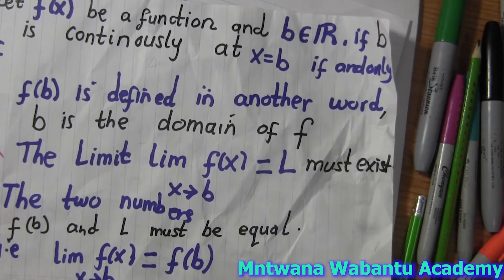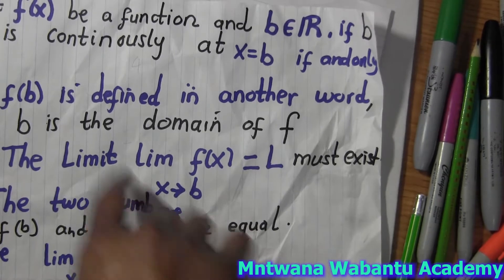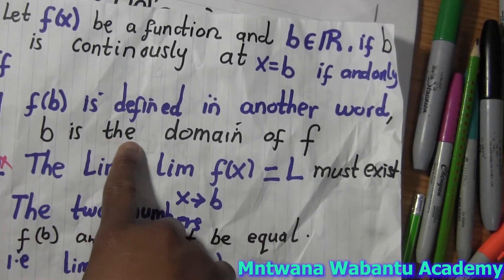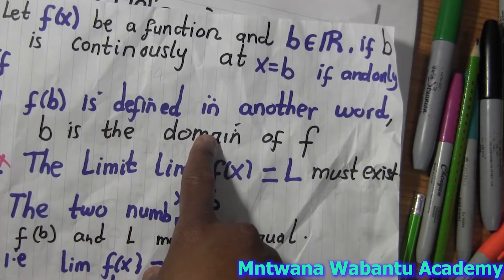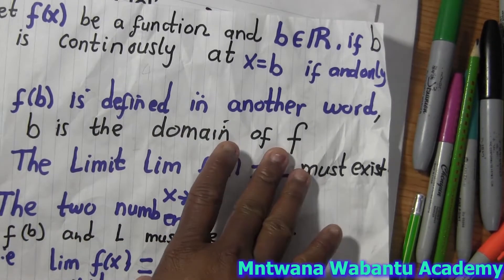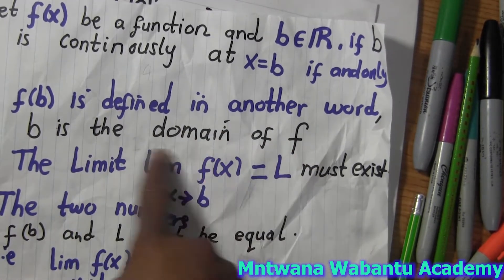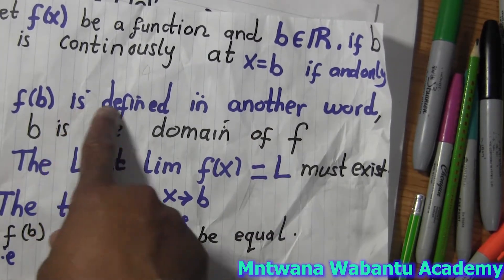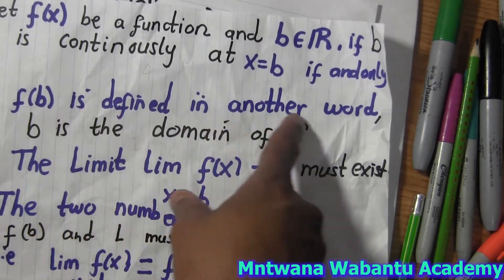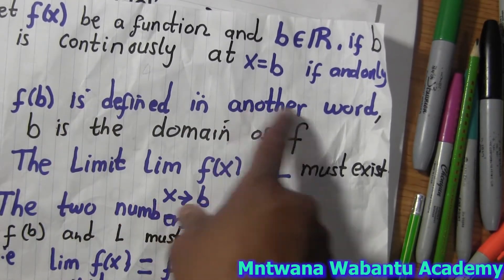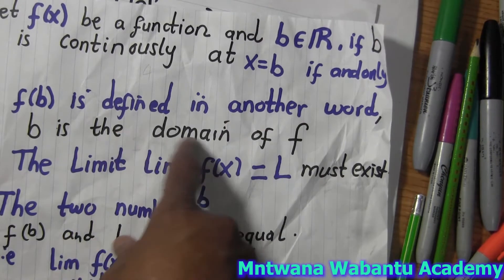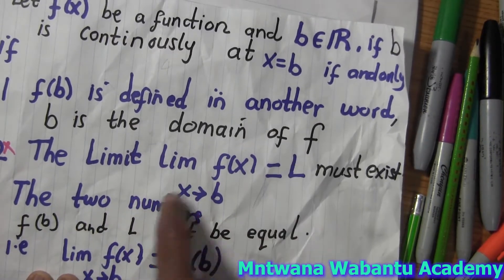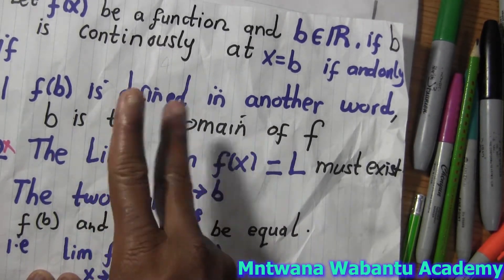So the conditions say — just remember — a function can be continuous if the domain b is defined, or in other words, b is in the domain of f(x). And also the limit of the function must exist.